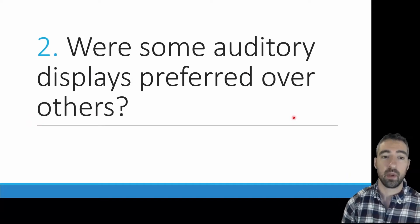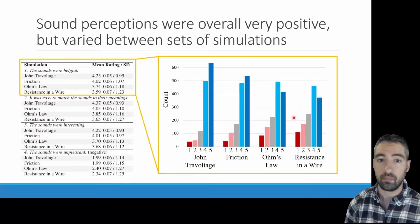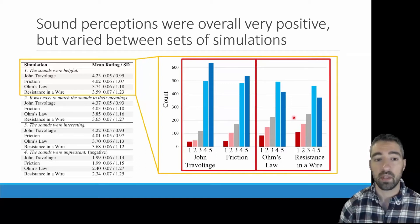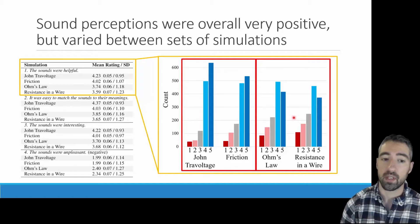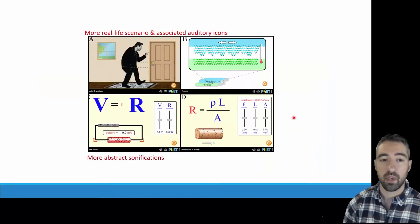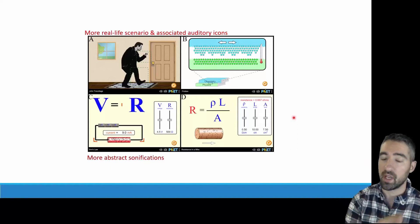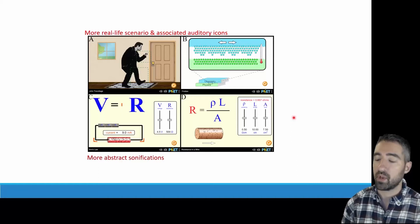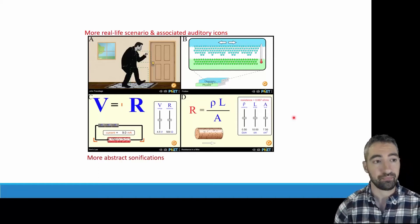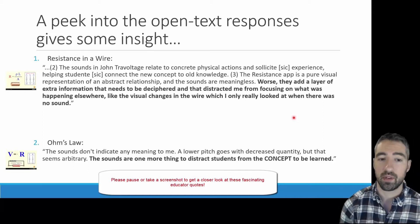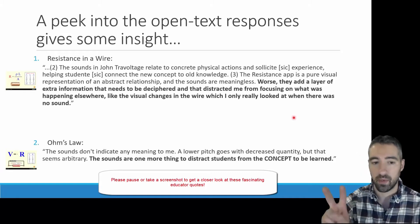So auditory display was in general preferred, but were some auditory displays preferred over others? Sound perceptions overall were very positive, but we did see variation between simulation sets. Ohm's Law and Resistance in a Wire received lower ratings than John Travoltage and Friction. Among the differences, John Travoltage and Friction feature more real-life scenarios and associated auditory icons — such as the brushing sound for the foot against the carpet and between books — as opposed to the more abstract sonifications in Ohm's Law and Resistance in a Wire. Preliminary qualitative analysis shows a theme: auditory icons associated with everyday life are considered more favorable and beneficial for student learning compared to abstract sonifications.